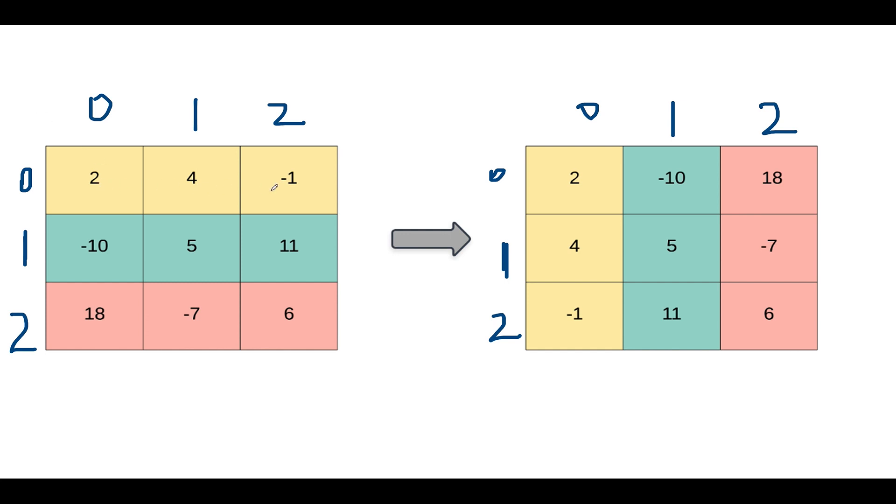Let's get back to the same example that was specified in the question. We have the matrix as 2, 4, -1, -10, 5, 11, 18, -7, 6, and we need to transpose this. The updated matrix should be in the form 2, -10, 18, 4, 5, -7, -1, 11, and 6.